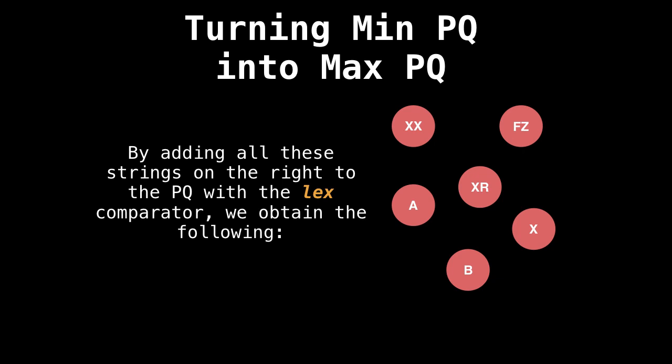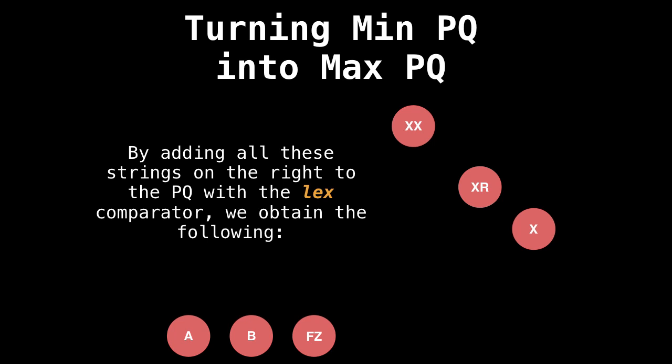So by adding all the numbers on the right to our priority queue with the lexicographic comparator, here's the ordering we should expect. First, we get a because it's the shortest string that has characters appearing closest to the start of the alphabet, then comes out b, then f, z, then x, then xr and xx.